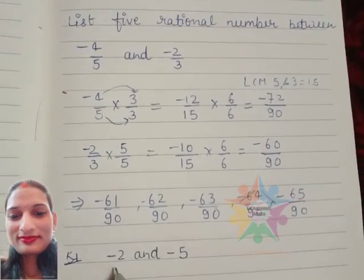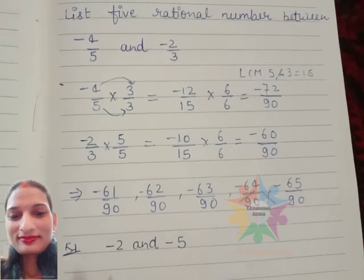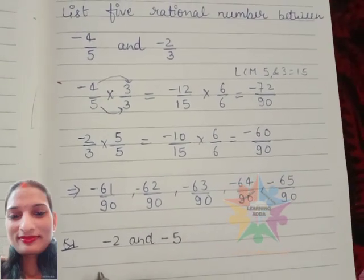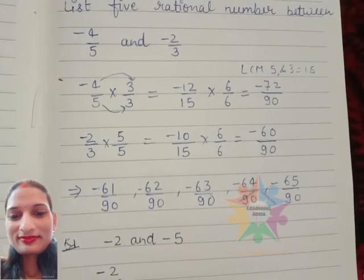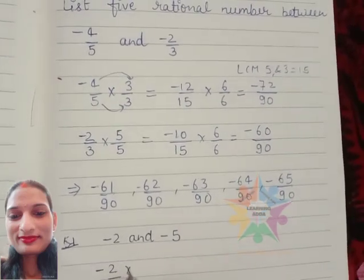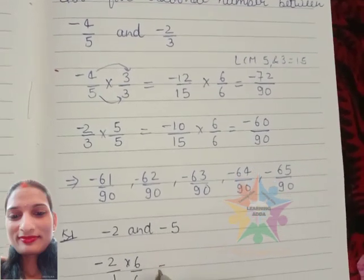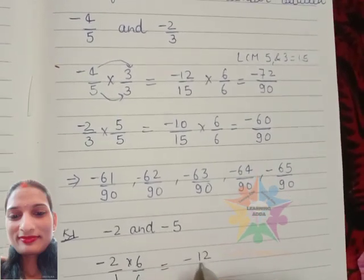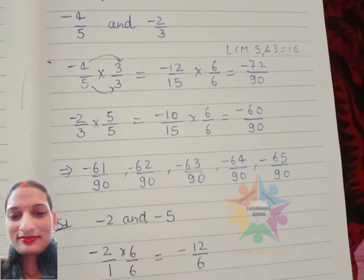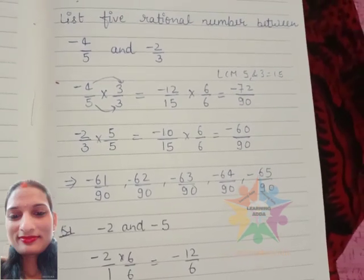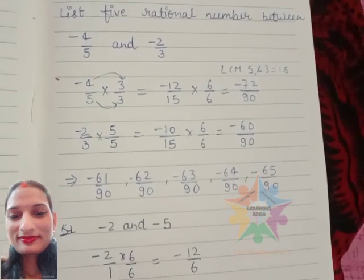Alternative method: We will change into decimal number form. -2/1 multiply numerator by 6 and denominator by 6, we get -12/6 as first number, and second one is -5/1 multiplied by 6 in numerator and denominator, which is -30/6.